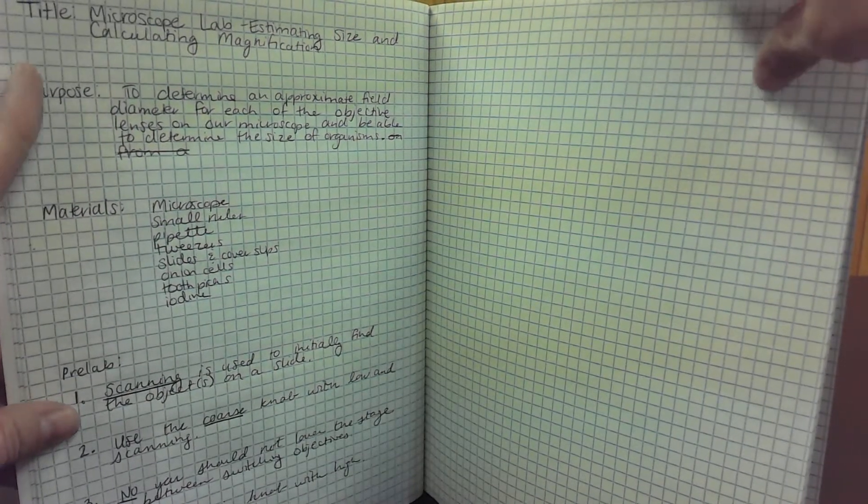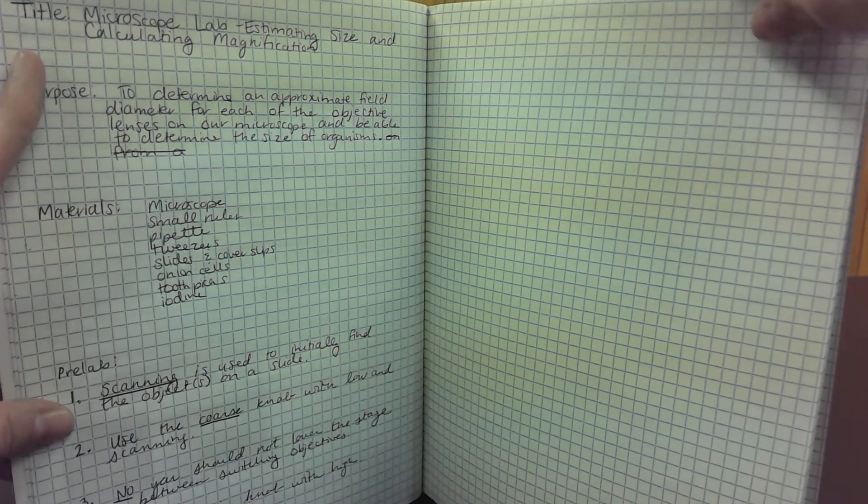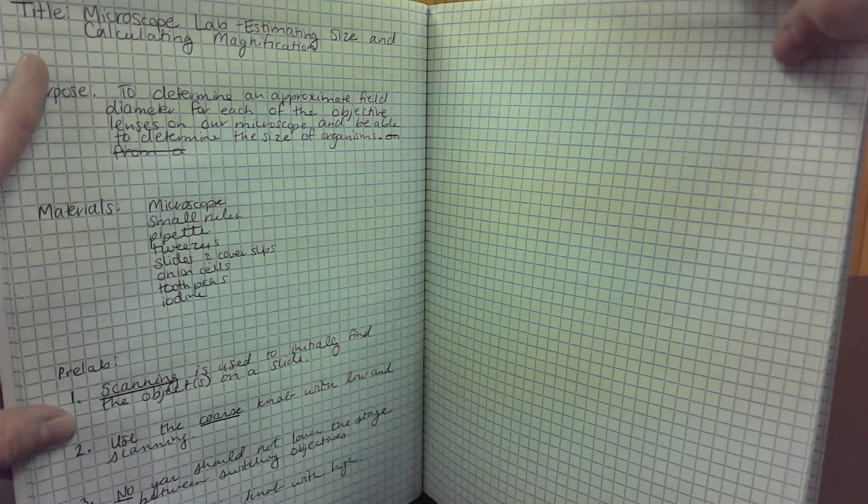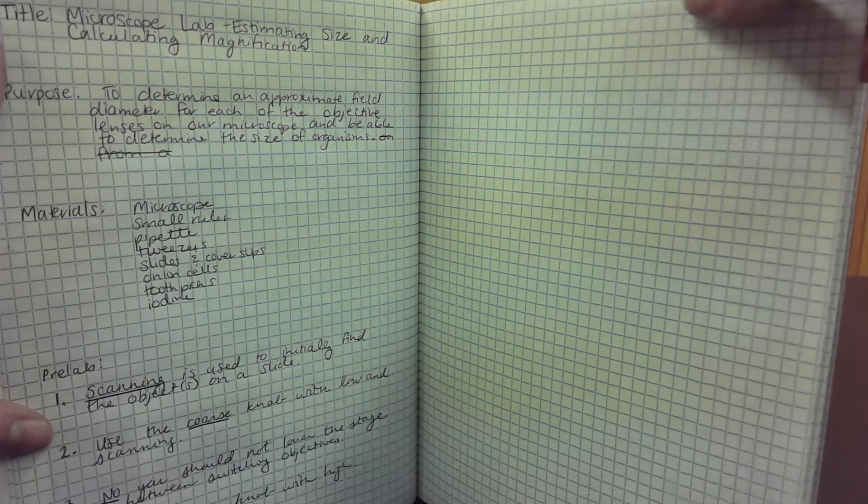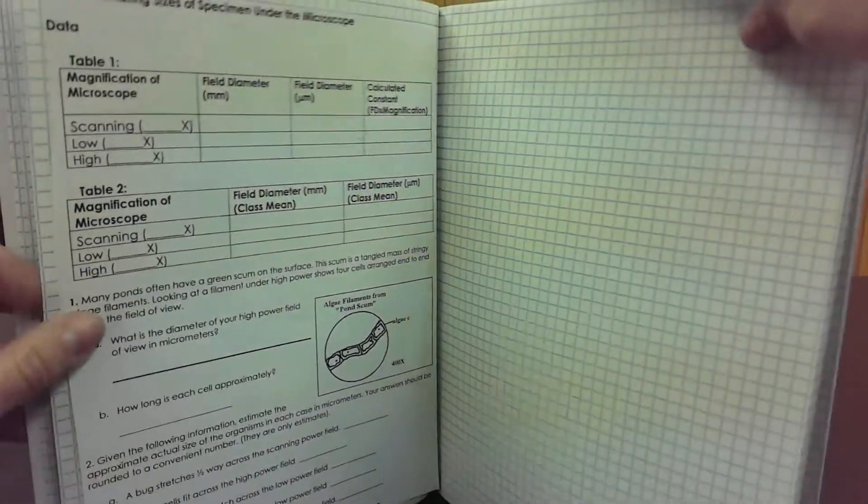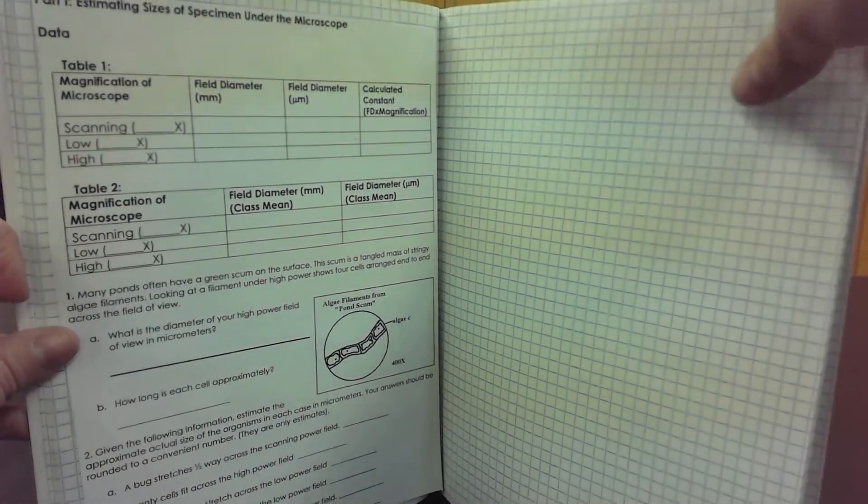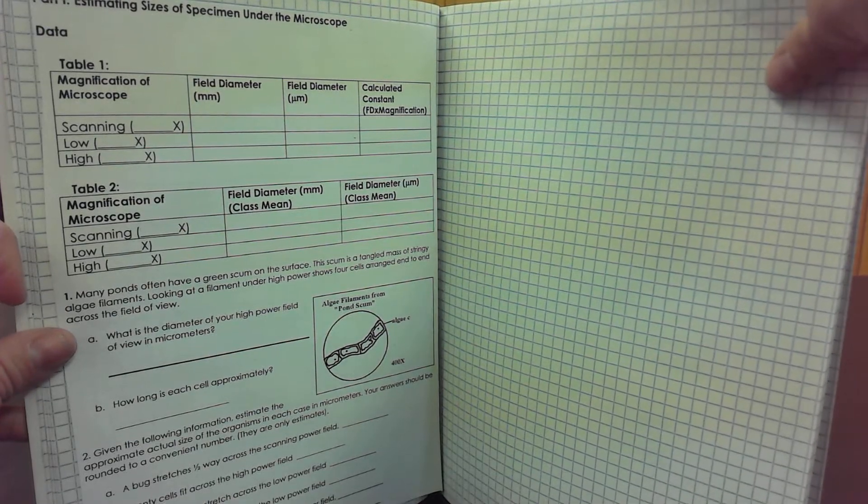Leave this next page—so this is the fourth page in my notebook—blank, because you're going to write the beginning of your lab. You can even title it 'microscope lab' if you want. The next page will be some of the data collection and procedure for this lab.